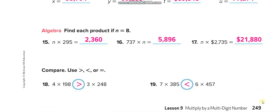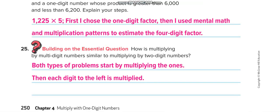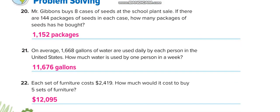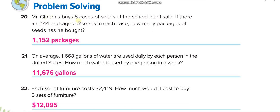This was page 249. Now we'll move to page number 250. The first one: Mr. Gibbons buys 8 cases of seeds at the school plant sale. If there are 144 packages of seed in each case, how many in eight cases? We will multiply 8 by 144.